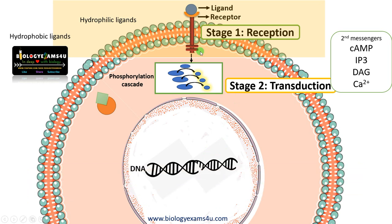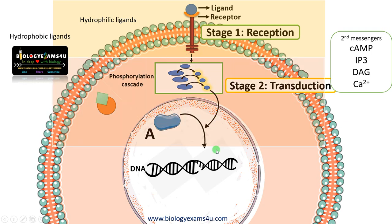The signal originated upon ligand binding is transmitted to the target molecule inside the nucleus. The sequential activation of relay molecules along with second messengers that is involved in transmission of signal from receptor to the target molecule is called transduction.